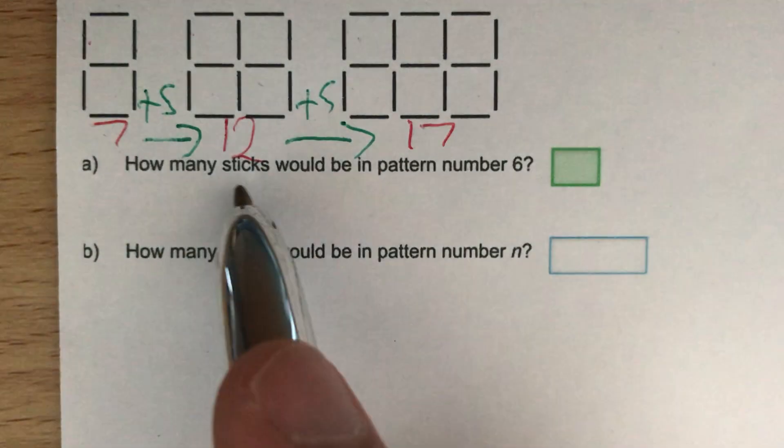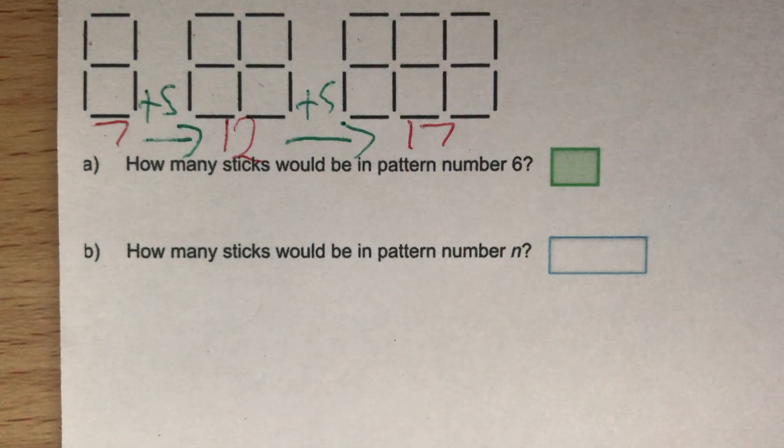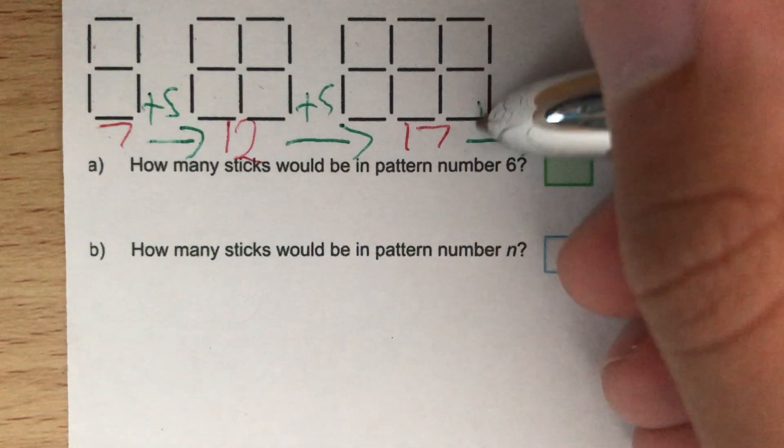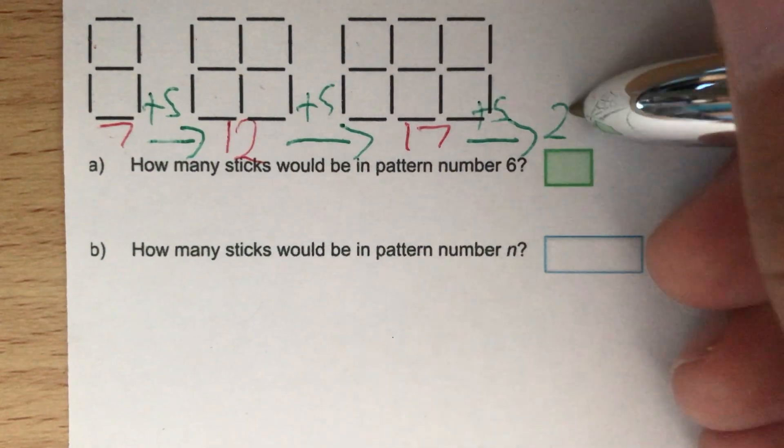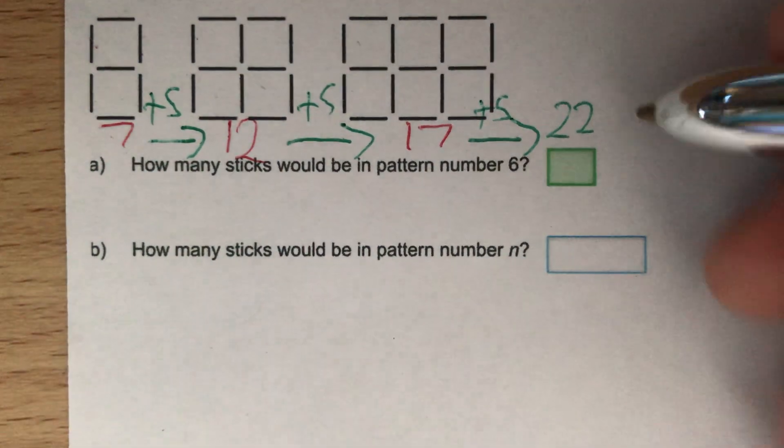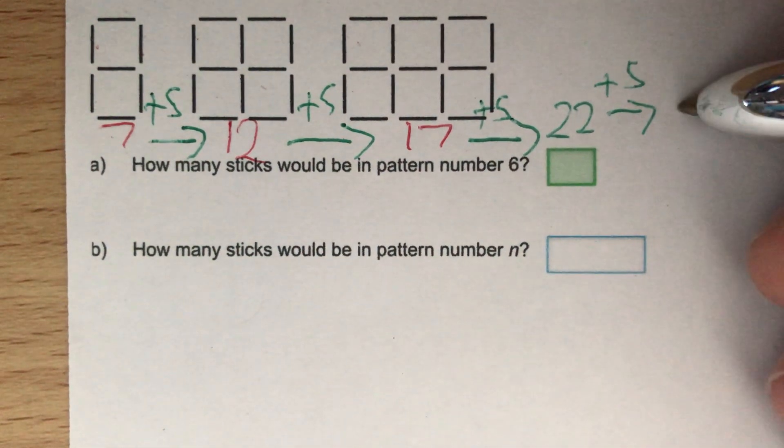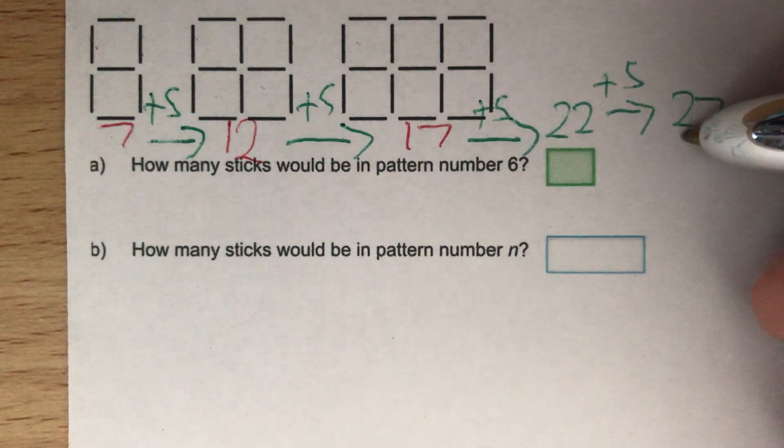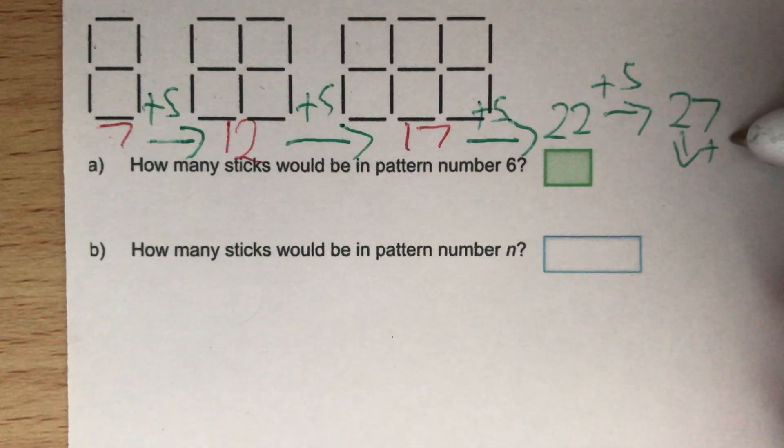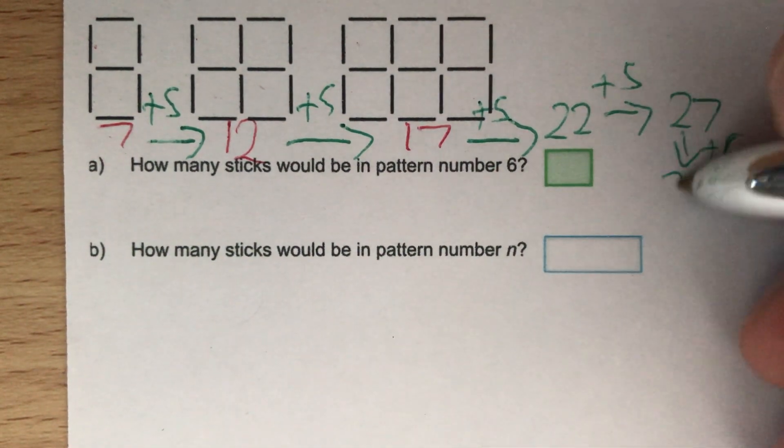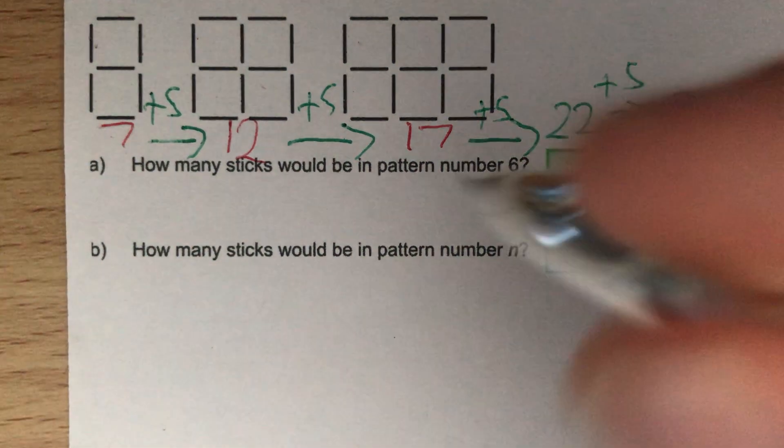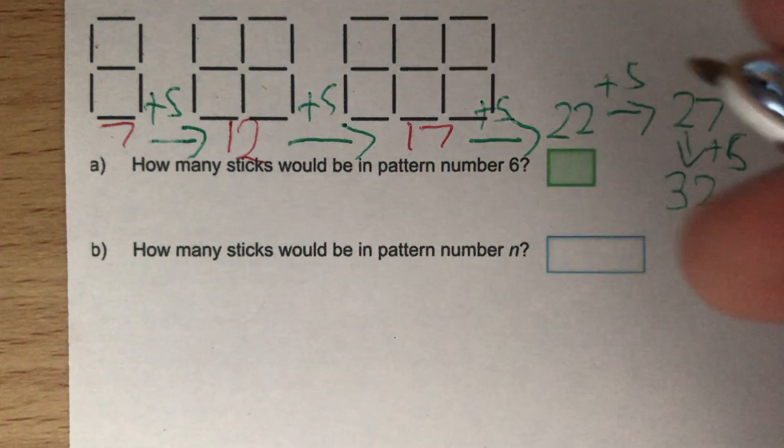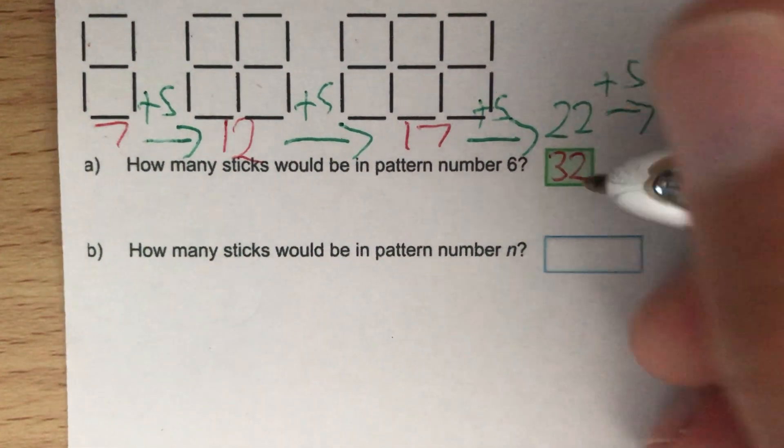If we go from 7 to 12 we add 5, to go from 12 to 17 we add 5. So to find our fourth pattern we add 5 again, we'd have 22. Our fifth pattern we add 5 again, we'd have 27, and finally our sixth pattern we add another 5 and we get 32. So the answer to our first part of our question, how many sticks would be in pattern number 6, is 32.